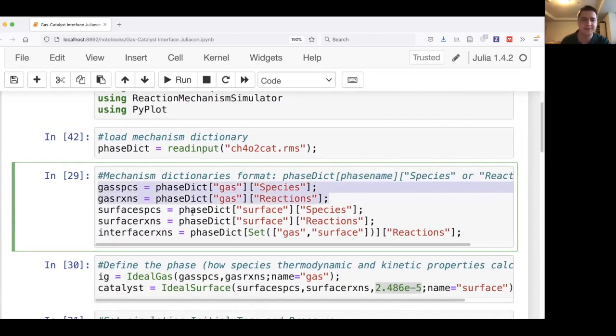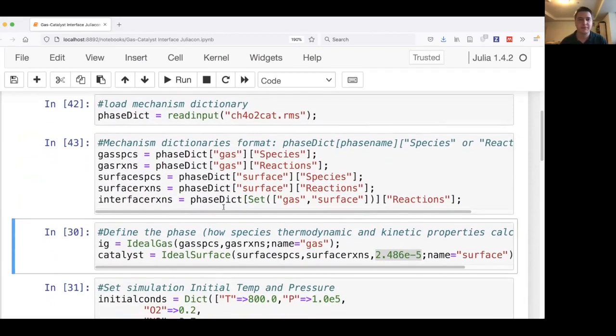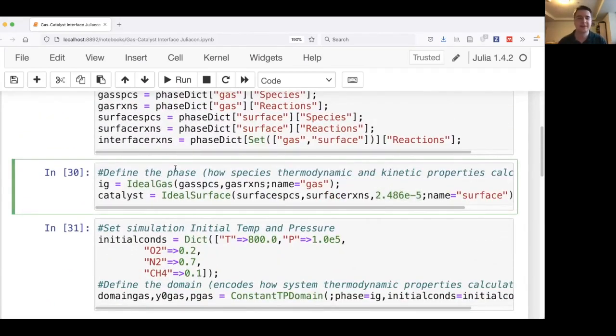As you can see here, we pull out the gas phase species and reactions. We do a little bit different thing for these interface reactions, which involve species that are in the gas and species that are in the surface. For these, the key is the set of the two names, and we just pull out reactions. Now we need to define these phases. We essentially tell it the assumptions about how we calculate thermochemistry and rates. Here we're defining an ideal gas with the gas species and reactions, and we're defining an ideal surface with the surface species and reactions. We're also defining the site concentration here.